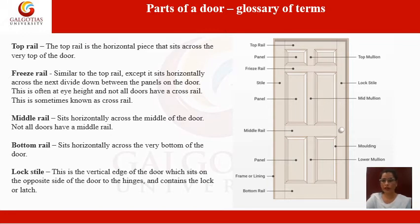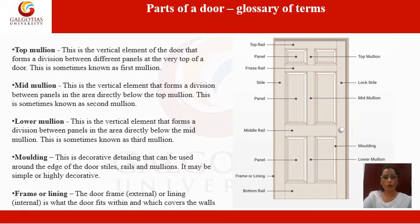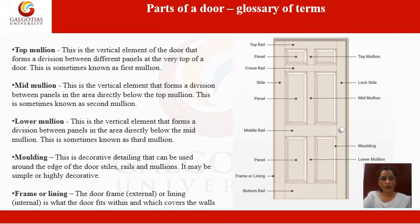The lock stile is the vertical edge of the door which is on the opposite side from the hinges and contains the lock or latch. Moving to mullions: the top mullion is a vertical member at the top portion of the door. The mid mullion is the vertical element that forms a division between panels in the area directly below the top mullion, sometimes known as the second mullion.